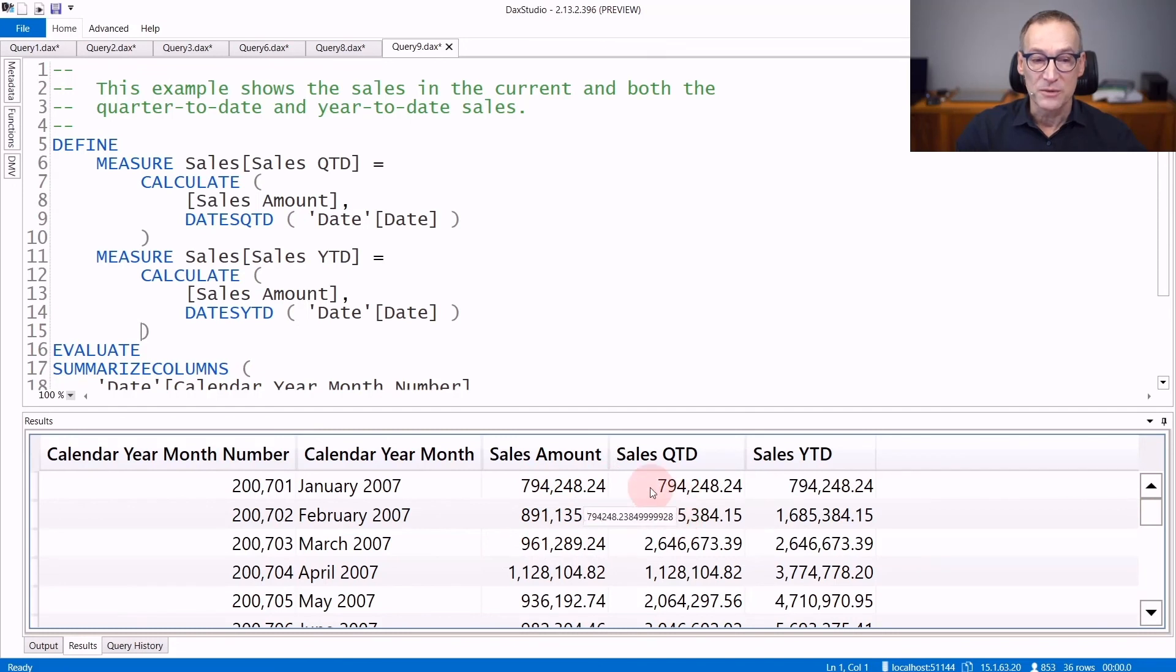Quarter-to-date shows values for the current month, the sum of the first and the second, the sum of first, second and third together. And when the quarter starts again, the function resets and starts counting again.